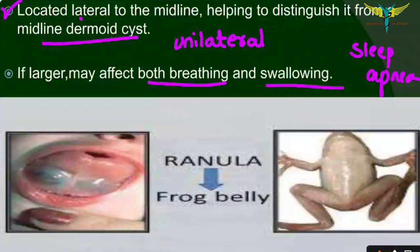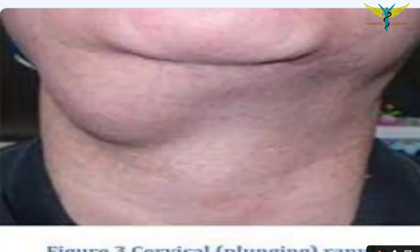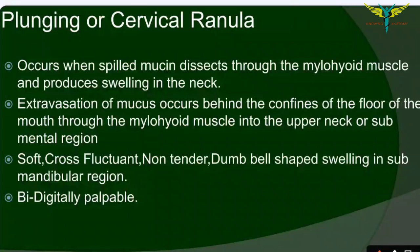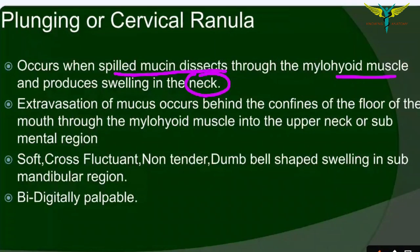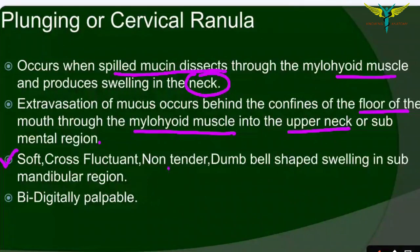This is a case of cervical ranula, or plunging ranula. Plunging or cervical ranulas occur when spilled mucin dissects through the mylohyoid muscle and produces a swelling in the neck. The extravasation of mucus occurs behind the floor of the mouth through the mylohyoid muscle into the upper neck region or the submental region. This swelling is soft, cross-fluctuant, non-tender, dumbbell-shaped, located in the submandibular region.